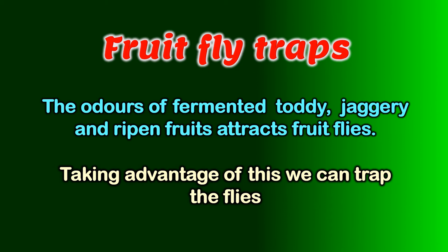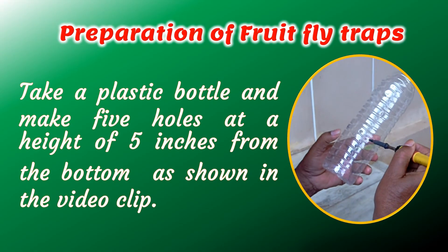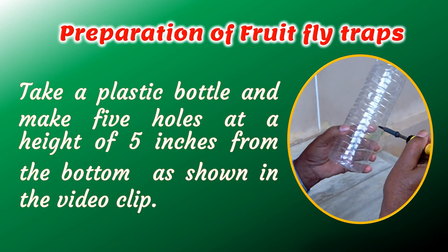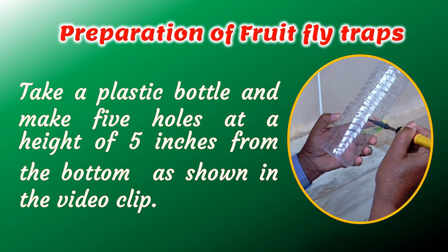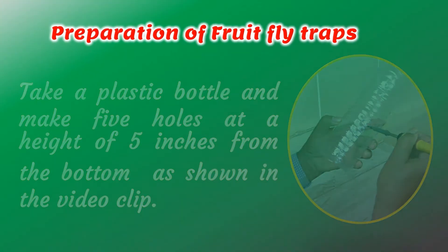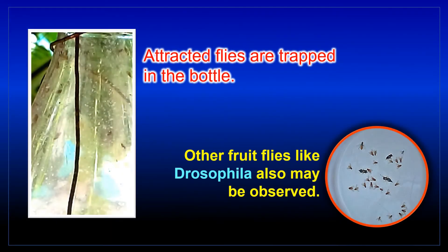The vapors of fermented toddy or jaggery and ripened fruits attract fruit flies. Taking advantage of this, we can trap the flies. Take a plastic bottle and make 5 holes at a height of 5 inches from the bottom as shown in the video clip. Pour water mixed with jaggery or toddy and add 5 to 6 drops of any contact insecticide. Screw up the lid and hang the bottle close to the vegetable or fruit plants. Attracted flies are trapped in the bottle.